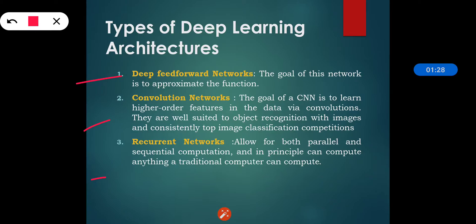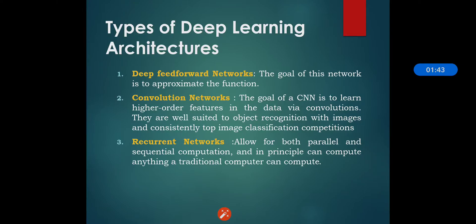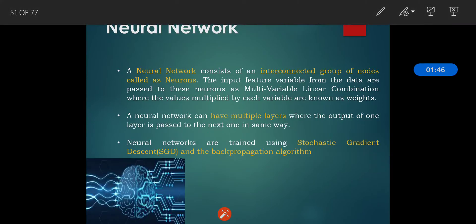All three types we will see in detail, but before that, as we are talking about deep feed forward networks, the feed forward network has an input layer and output layer — all these things are connected to a neural network. So we will first look at neural networks.